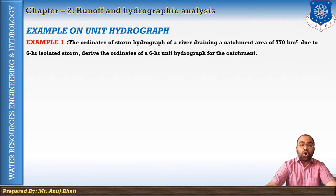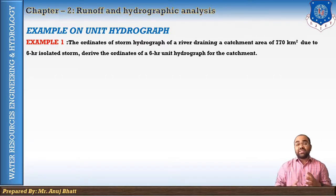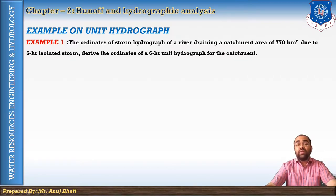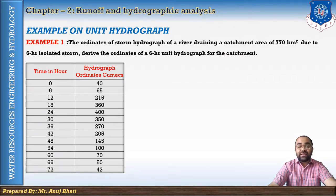The first example: the ordinates of a storm hydrograph of a river with a catchment area of 770 square kilometers due to a six-hour isolated storm are given. We have the data for the six-hour isolated storm for that area and a catchment area of 770 km². Here we have time in hours and the flood hydrograph in cumecs — these are the six-hour hydrograph ordinates.